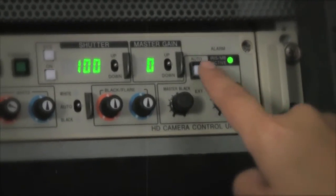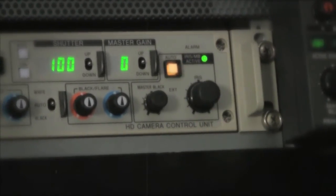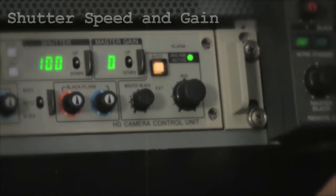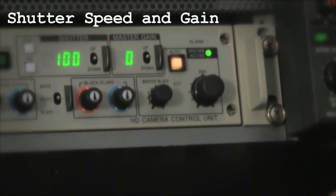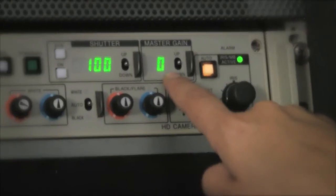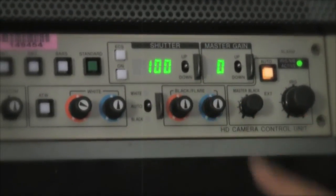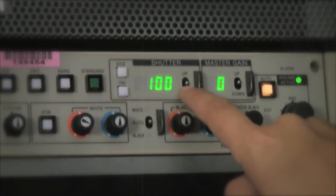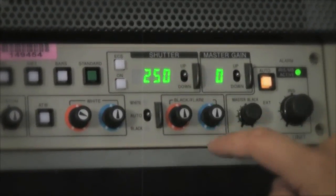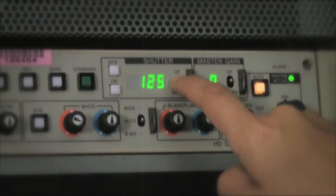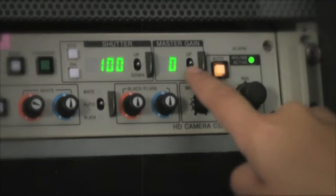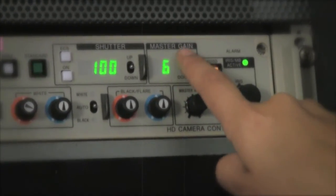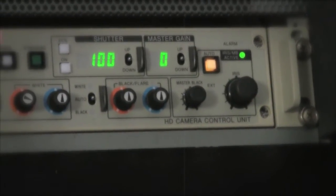You always want to make sure that you're in an auto iris before you begin the white balance. It's also very helpful to double check that the master gain is set to zero and our shutter speed is one one-hundredth of a second. If you needed to adjust them, you could easily change your shutter speed up or down or adjust your gain up or down in case you had extreme low-light conditions.